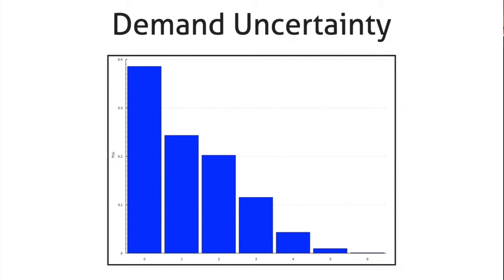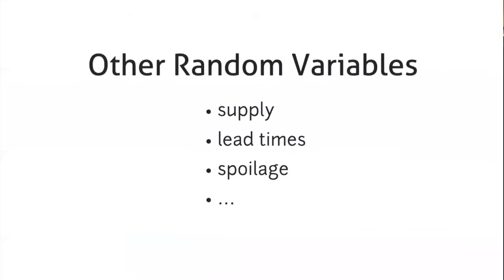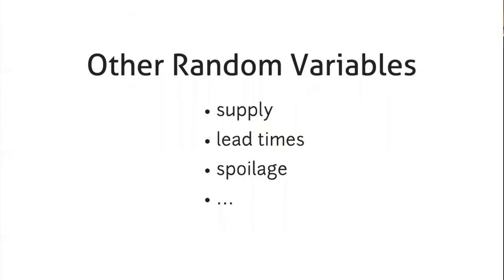Our best bet with sophisticated modeling is to produce a probability distribution that models our expectations. The rest of the world isn't deterministic either — there's always going to be some randomness in other parts of the system, like the supply, the lead times, and for specific items like groceries, there's spoilage. Unfortunately, stochastic optimization with even a single random variable quickly becomes intractable. So realistically, most models — and so far ours included — really only focus on the uncertainty created by demand.